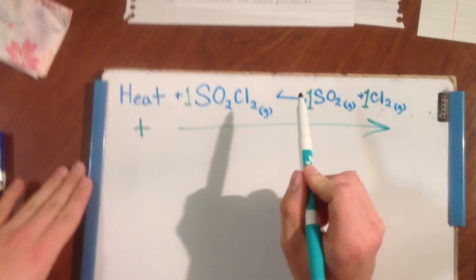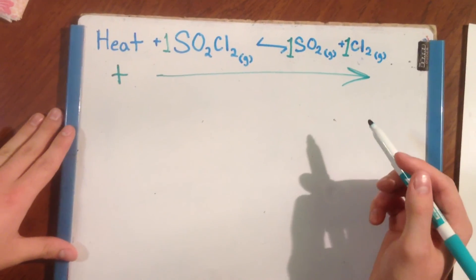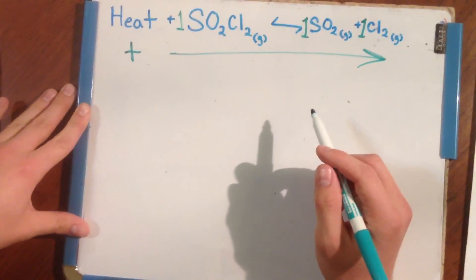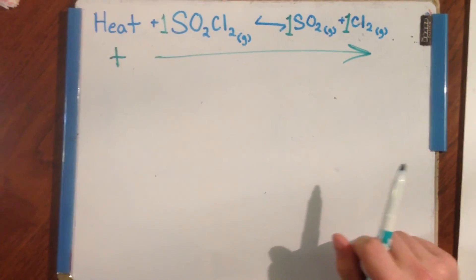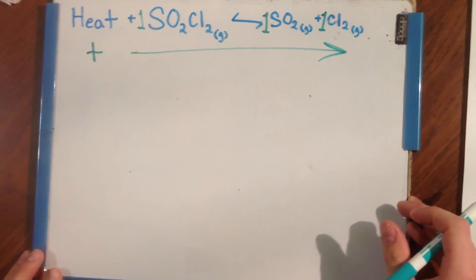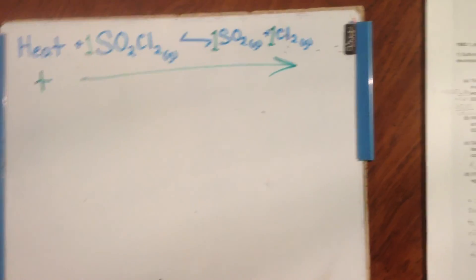And because the products are in the denominator of the Kp expression, the value of the equilibrium constant will decrease. That is how to solve the 1983 AP Chemistry free response question number 1.